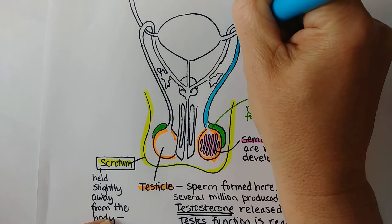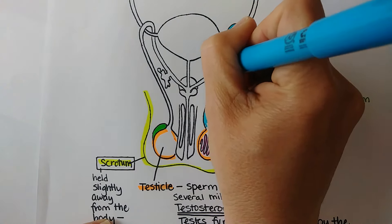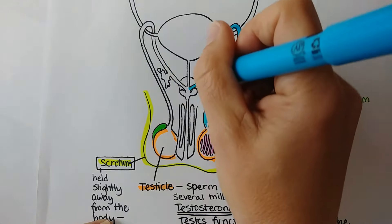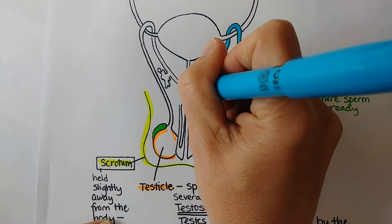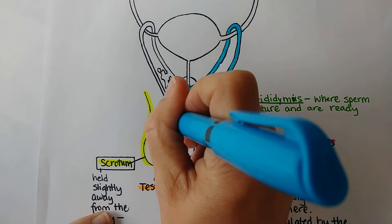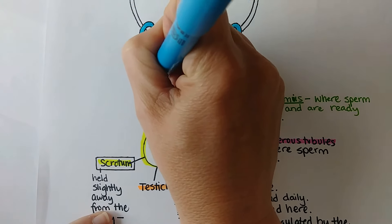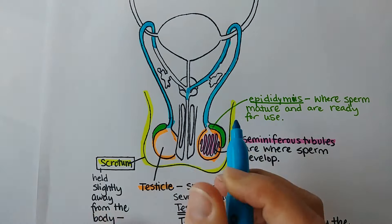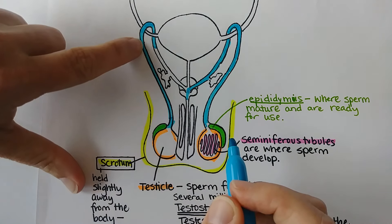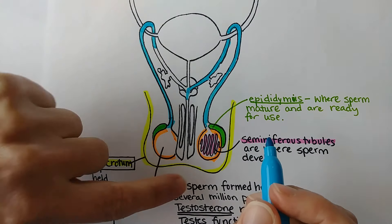The vas deferens is sometimes called the ductus deferens. It wraps around the ureters, which is interesting in terms of how it develops embryonically. Before sexual arousal, the mature sperm are still waiting in the epididymis. During arousal, the sperm move up the vas deferens, fluids are added, and then the ejaculate comes out during orgasm.